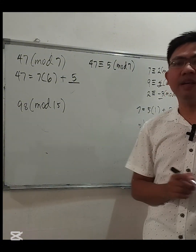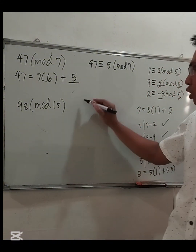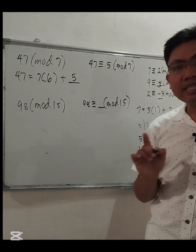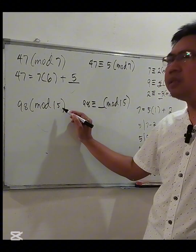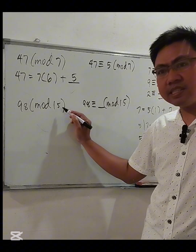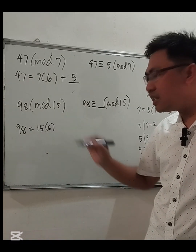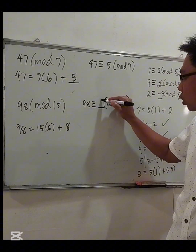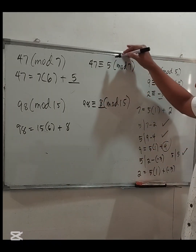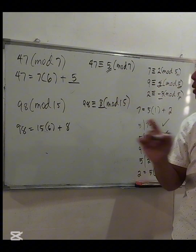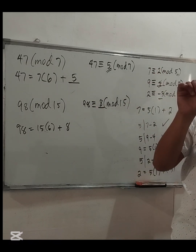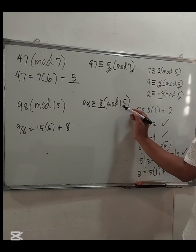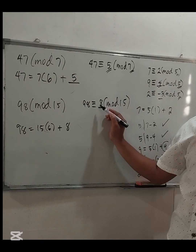For 98 modulo 15: we need to find b such that 98 is congruent to b modulo 15. Dividing, 98 ÷ 15 gives quotient 6. So 98 = 15 × 6 + 8, since 15 × 6 = 90 and the remainder is 8. Therefore, 98 is congruent to 8 modulo 15.